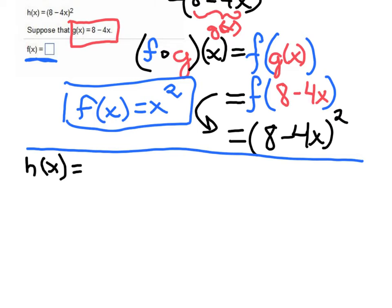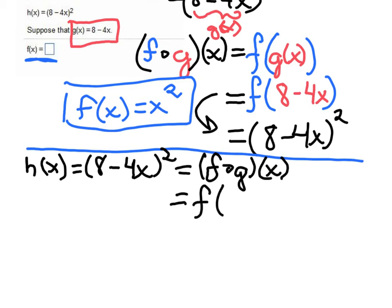So h(x), this is what we were told. H(x) = (8 - 4x)². Now we're supposed to write it as a composition, f of g. Sorry, I've gotten a bit sloppy there. Which is equal to f(g(x)).